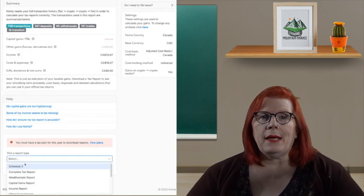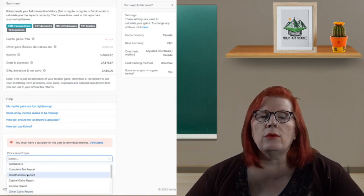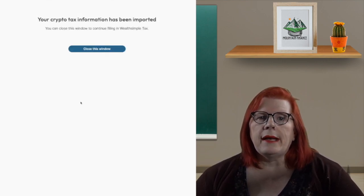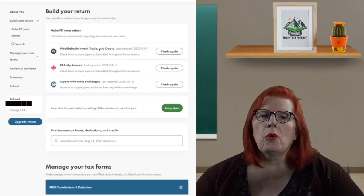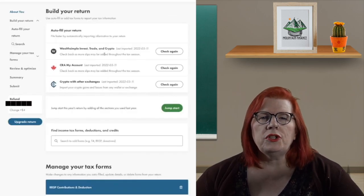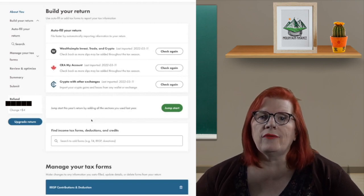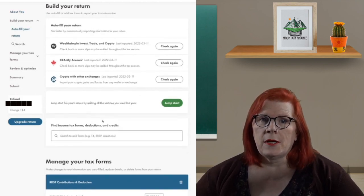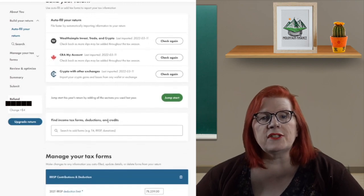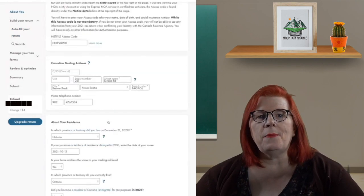Once you choose your plan on Coin.ly, then you download the report for Wealthsimple and it will give you the option to add it to your return, which you want to do. Once you are back, just scroll all the way up and down and make sure you have not missed any fields. Once you have done that, click on submit on the left hand side of the page.